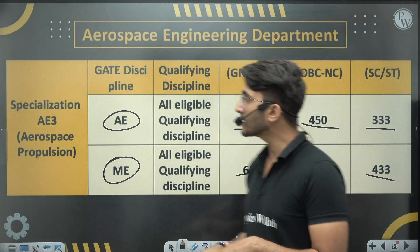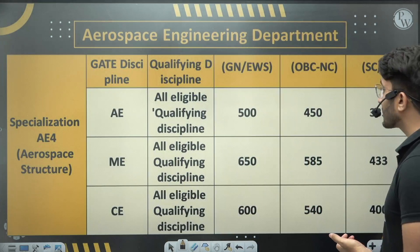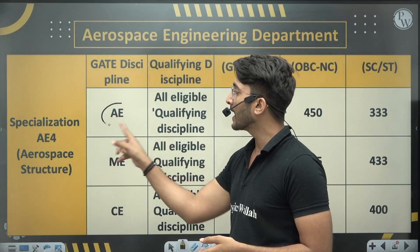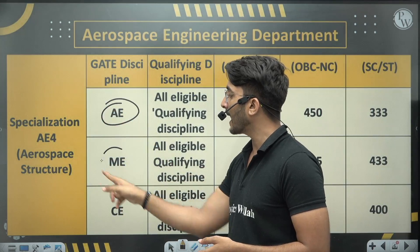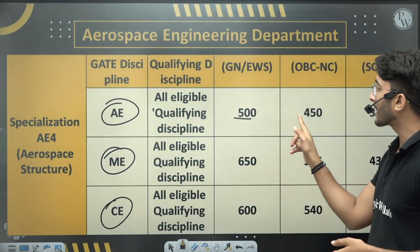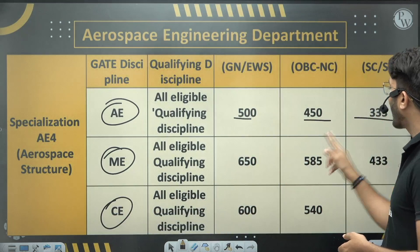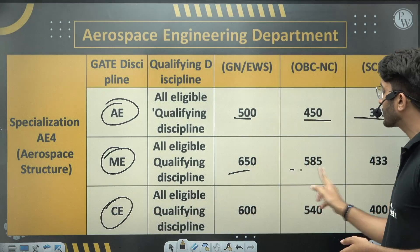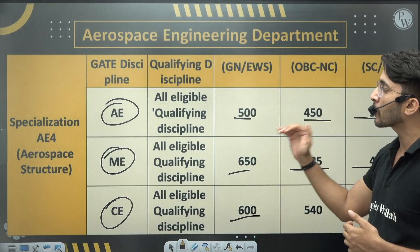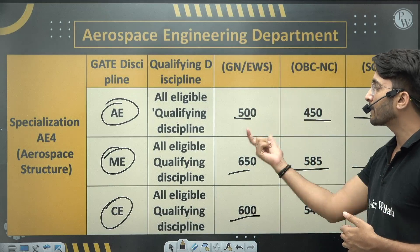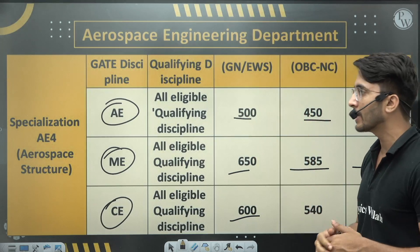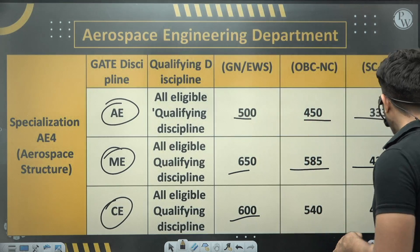For the Aerospace Structures specialization, students with GATE papers in AE, ME, and CE are eligible. The minimum GATE scores required are mentioned in the PDF; if you have a score higher than the cutoff you are definitely eligible.